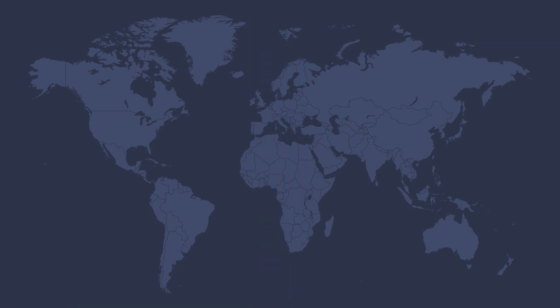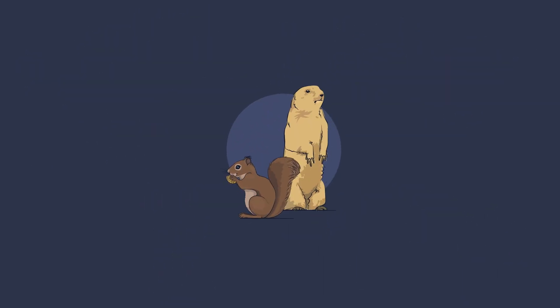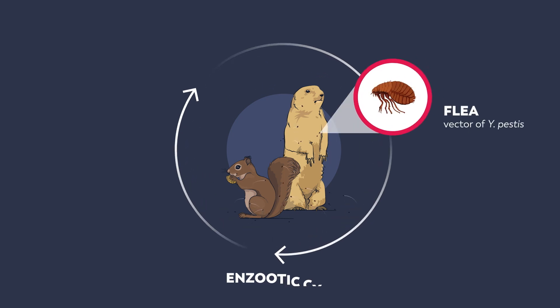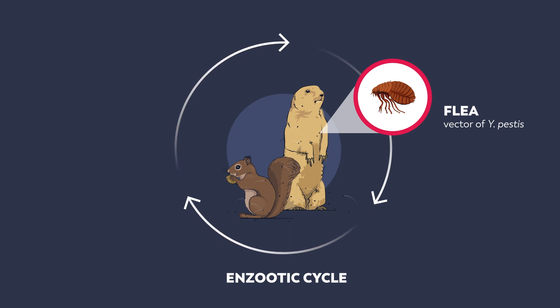Plague is endemic in parts of Africa, South America, and Central Asia, as well as the Western United States. Scientists believe that plague evolved on the high plains of Eurasia and has since become endemic in many areas worldwide. The natural hosts in the United States are ground rodents, primarily prairie dogs and certain squirrels. Fleas serve as the vector and transmit Y. pestis in an enzootic cycle among rodents in the wild.